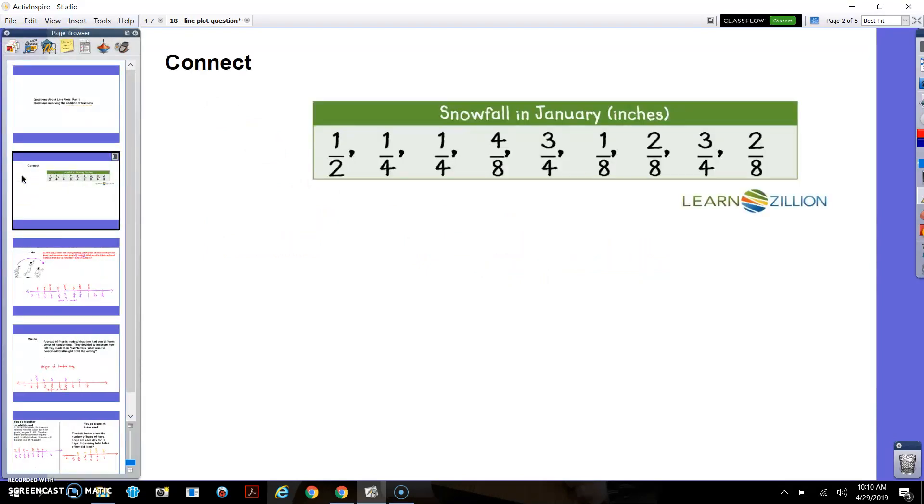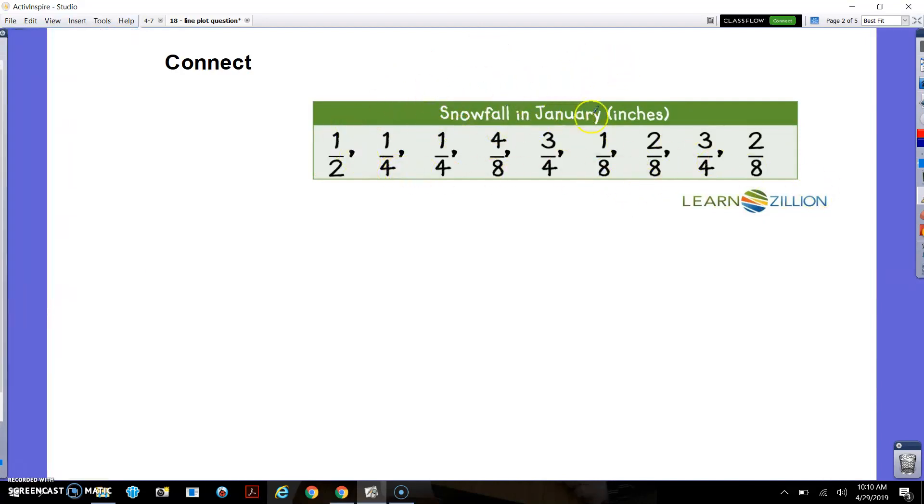Yesterday, we made line plots. We would say, okay, I want to make a line plot of this snowfall in January. I guess maybe one, two, three, four, five, six, seven, eight, over nine years. Something like that. Rained or snowed a fraction of an inch each January. Or maybe these are different days in January.